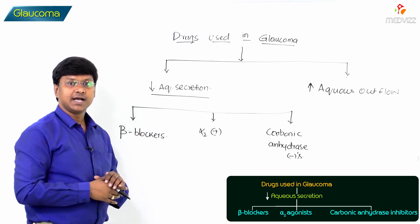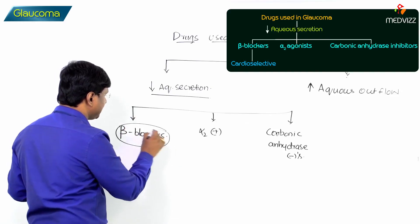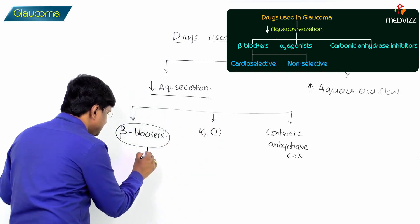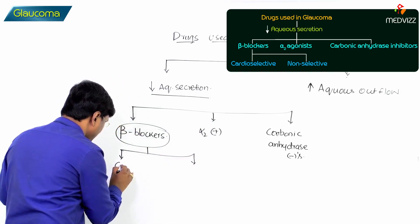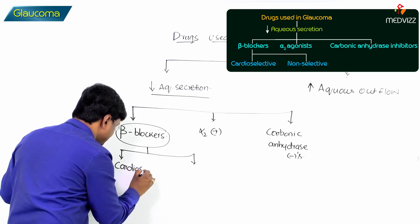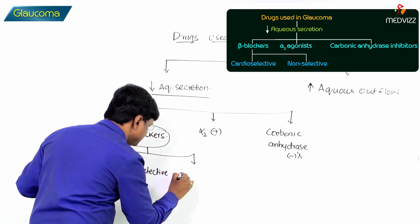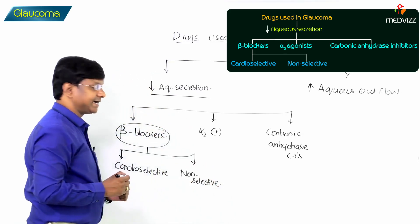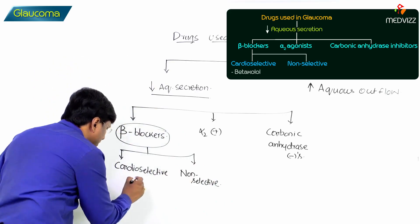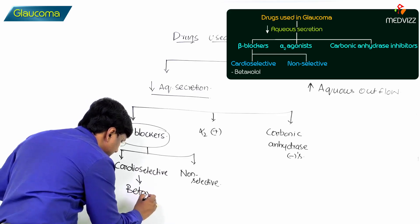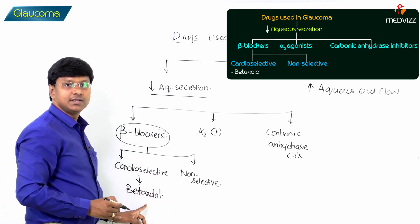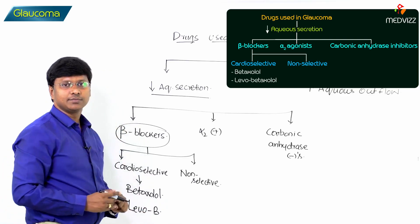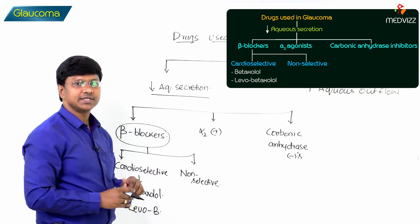Taking beta blockers again — these beta blockers include cardioselective beta blockers as well as non-selective beta blockers, which are used for decreasing the aqueous humor production. The cardioselective drugs are betaxolol and levobetaxolol. These are the cardioselective beta blockers which will reduce the aqueous humor production.